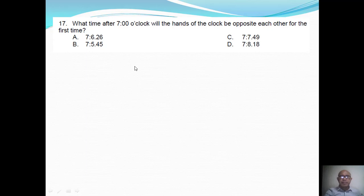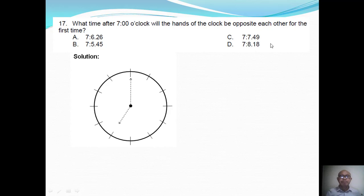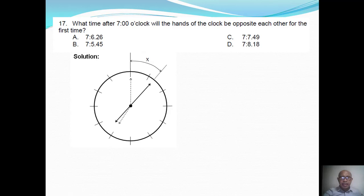So for this problem, we will start by setting the hands of the clock at 7 o'clock. Then position the hands such that they are in opposite position to each other. So the minute hand has moved by x minutes, and correspondingly the hour hand moves by x over 12.